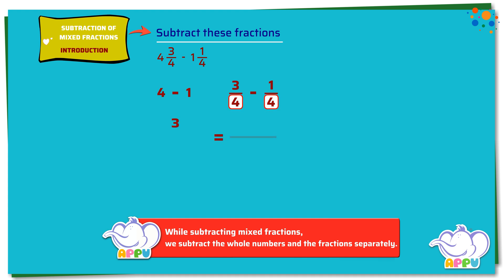We write the denominator as 4 and we subtract the numerators. 3 minus 1 equals 2. This is 2/4. So the answer is 3 and 2/4.